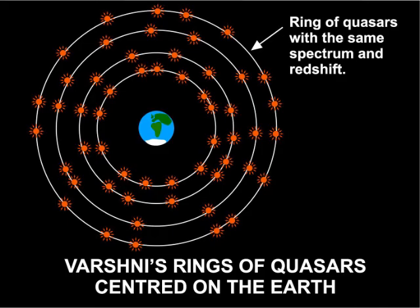In 1976, Varshini collected quasars into 57 groups with similar spectra. He then found that each group had the same redshift. This pointed to quasars forming concentric shells around the Earth, making the Earth effectively the centre of the universe. Further research supported his claim. Searching on Wikipedia will show how much his work has been dismissed, for it says his works are — quote — 'rarely cited.' We can guess why.